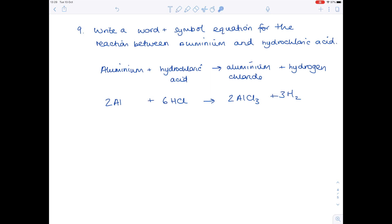Now double check. You've got two Als on the left-hand side, two on the right, six chlorines on the right-hand side, six on the left, six hydrogens, six hydrogens. It's done.